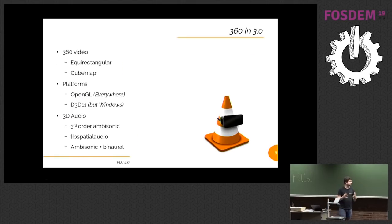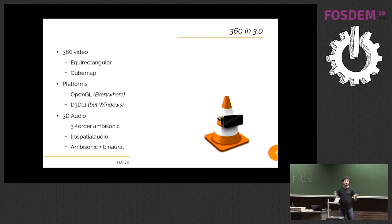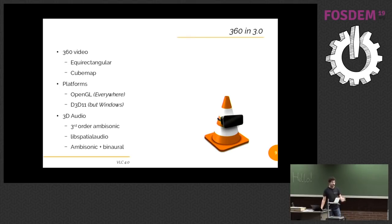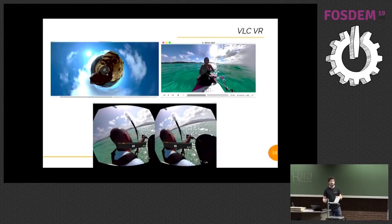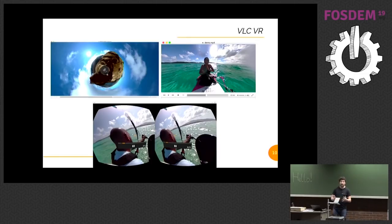In VLC 3.0, we had 360 support — those videos you can use on a normal laptop without installing complex software, and it works everywhere. You can use touch, your mic, your keyboard and mouse, and move it around. It's done using equirectangular cube map projection in OpenGL everywhere, except on Windows where it uses Direct3D. At the same time, we also did everything related to 3D audio, which is ambisonic — we wrote ambisonic rendering and a binaural rendering stack for the audio part.